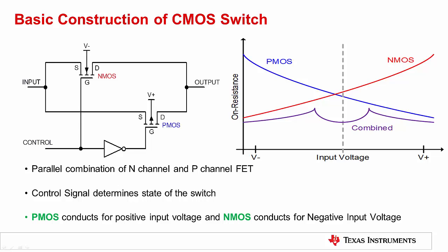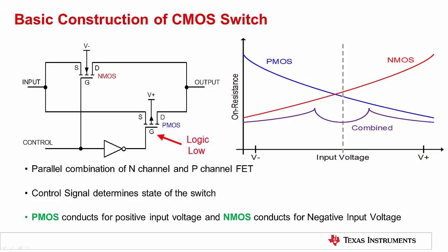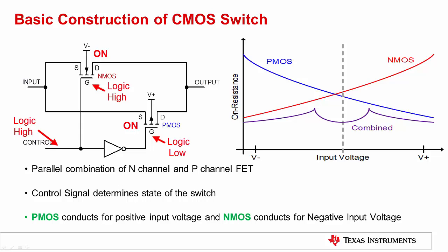The slide here shows the typical construction of a CMOS switch. A CMOS switch is formed by connecting an N-channel MOSFET and a P-channel MOSFET in parallel, as shown here. This particular arrangement allows us to switch both positive and negative voltages at the output with equal ease. A logic high signal at the gate of the NMOS will enable this MOSFET and allow negative voltages to pass to the output, while a logic low at the gate of the PMOS will enable this MOSFET and allow positive voltages to pass to the output. The inverter is used to turn on both transistors when a logic high input is applied to the control signal, or turn off both transistors with a logic low input.